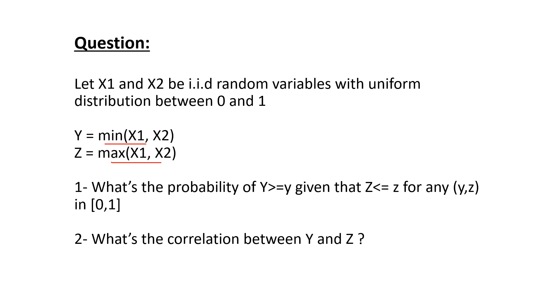What's the probability of y being greater than or equal to some value y, given that z is less than or equal to some value z, for any y and z between 0 and 1? And what's the correlation between y and z?